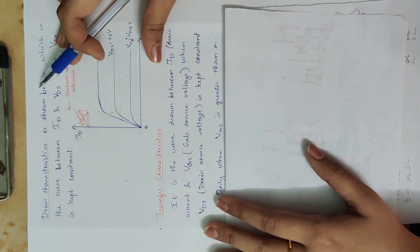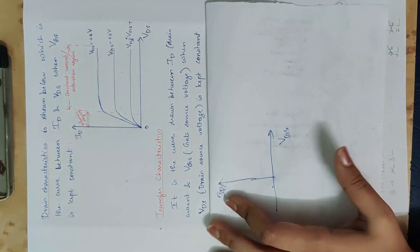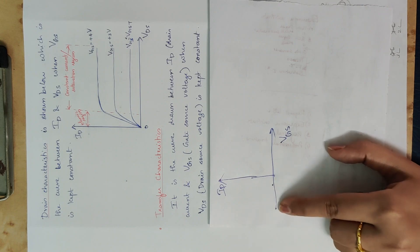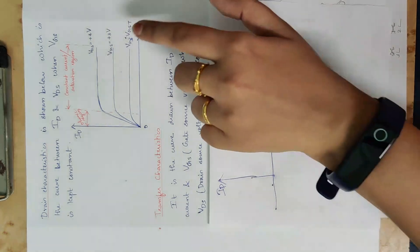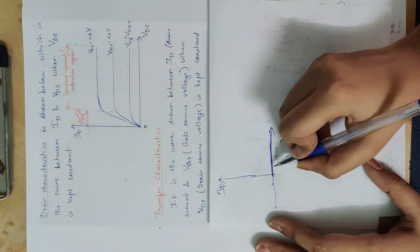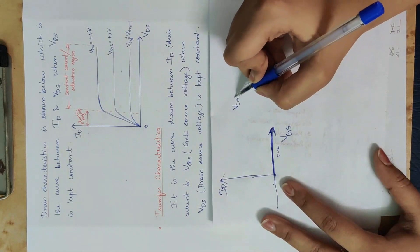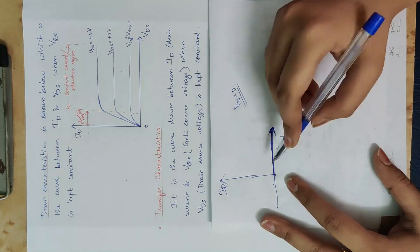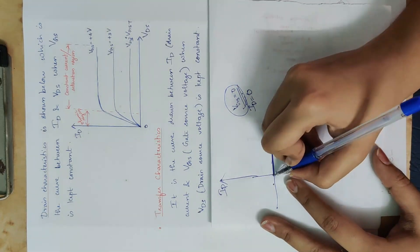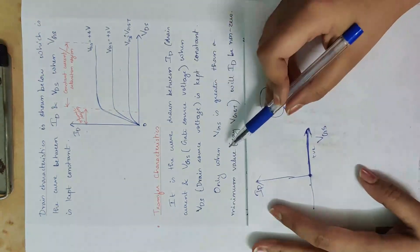We have three quantities. The transfer characteristic is a graph of ID versus VGS. For E-MOSFET, VGS is positive, so the graph is on the positive axis. When VGS is zero, the drain current is zero, so the curve starts from zero on that axis.